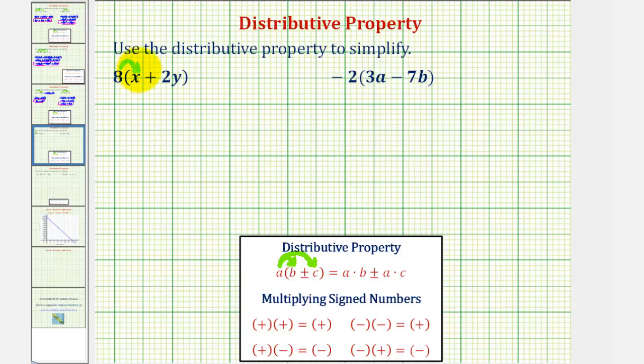We'll have 8 times x plus 8 times 2y. So again, 8 times x plus 8 times 2y.